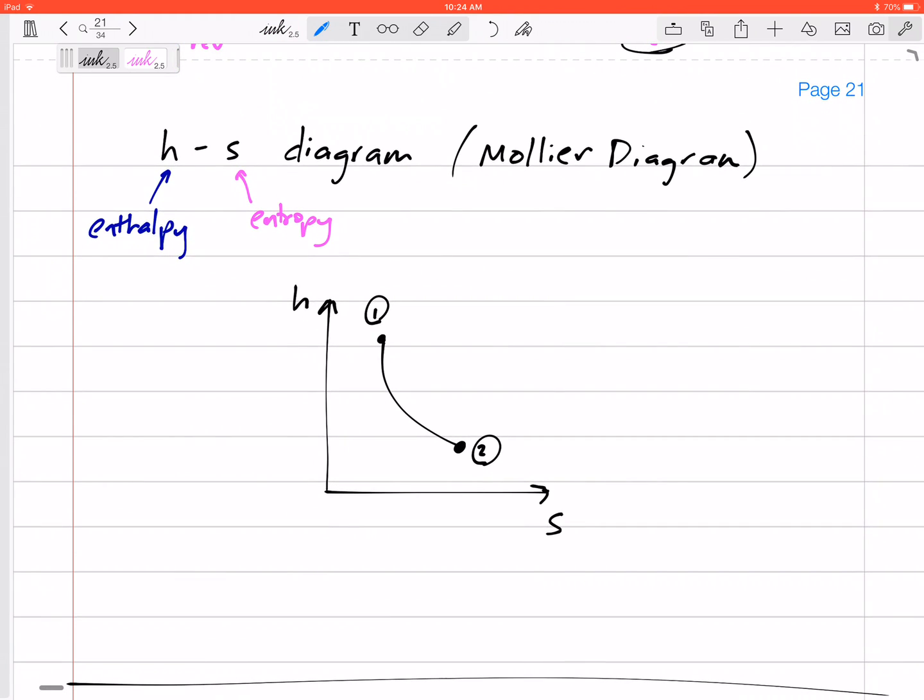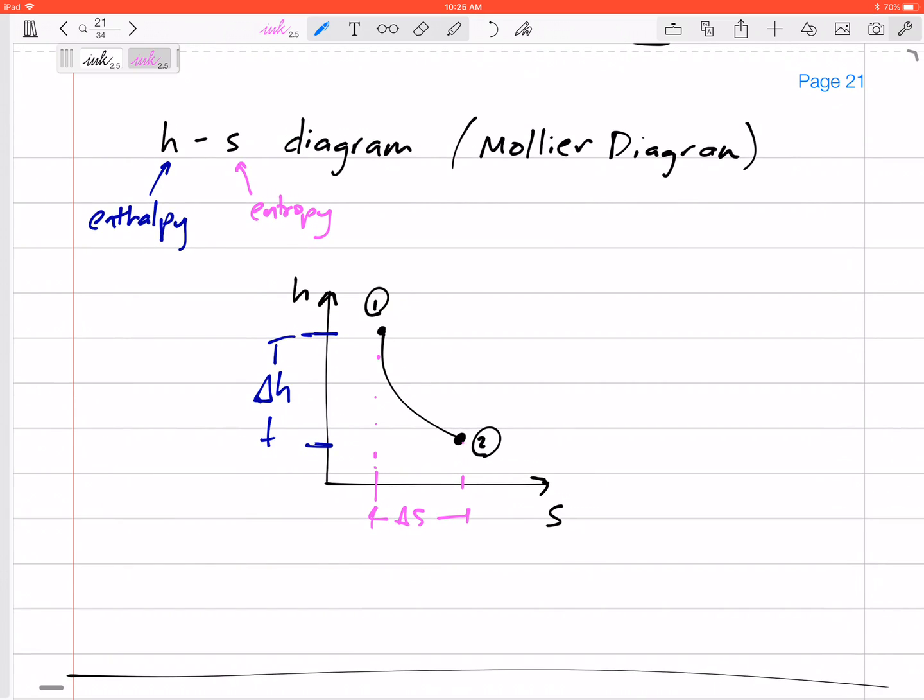And finding the area under the TS diagram gives you the value for the internally reversible heat transfer. Now another interesting diagram is the Mollier diagram or the enthalpy entropy HS diagram. So for the HS diagram, here's our change in H. Our delta H is on this axis, and our delta S is right here.